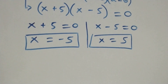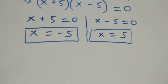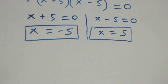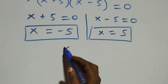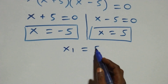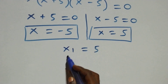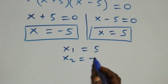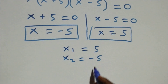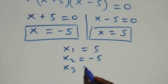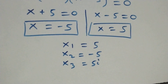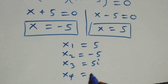Altogether we have four solutions: x₁ equals 5, x₂ equals minus 5, x₃ equals 5i from the complex solutions, and x₄ equals minus 5i. So two real solutions and two complex solutions.